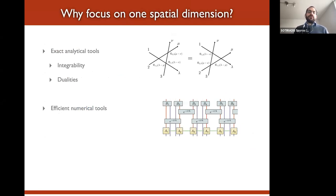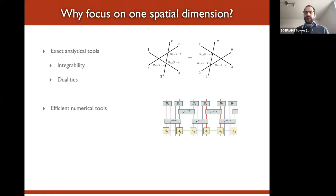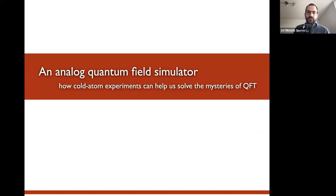Why focus on one spatial dimension? We have exact analytical tools like integrability and exact dualities that allow us to study in principle exactly the dynamics of quantum models in one dimension, and the numerical tools I mentioned are primarily applicable to one-plus-one dimensional systems due to the scaling of entanglement.